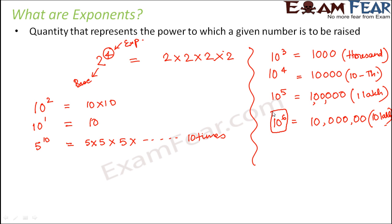So writing 10 to the power 6 is a lot easier than writing 6 zeros after 1. So that's more tedious and that's more complicated than 10 to the power 6, right? So this is how exponent helps us.